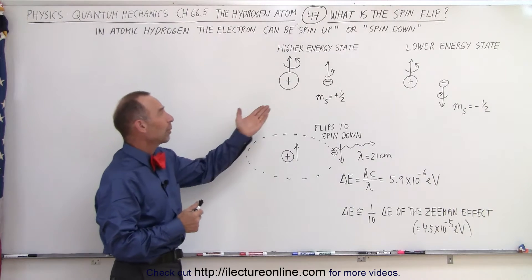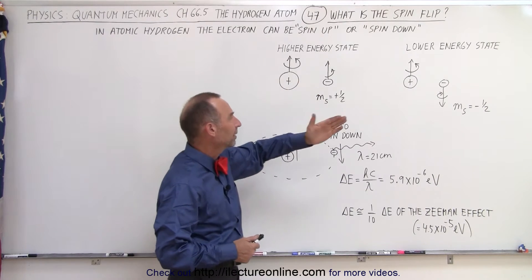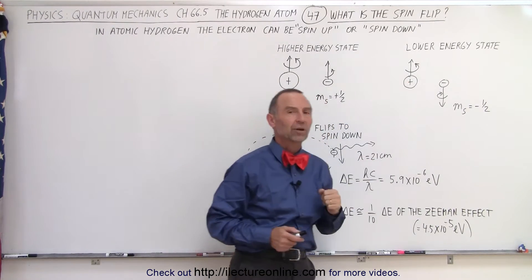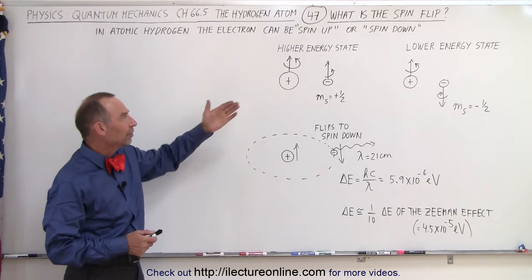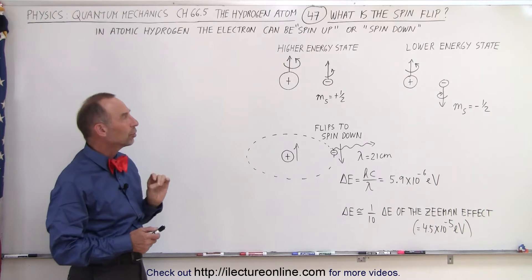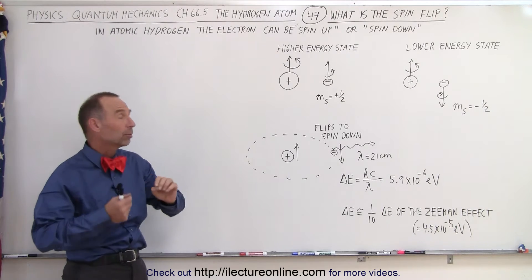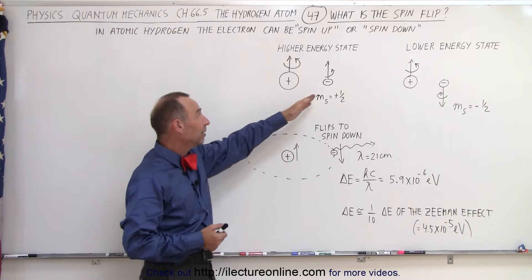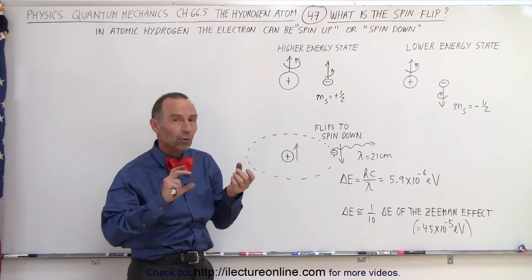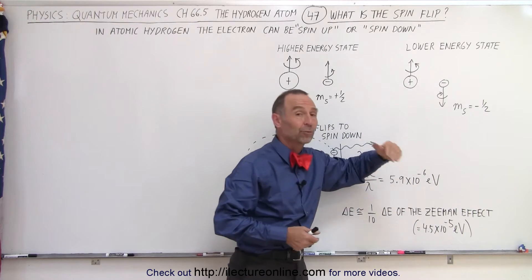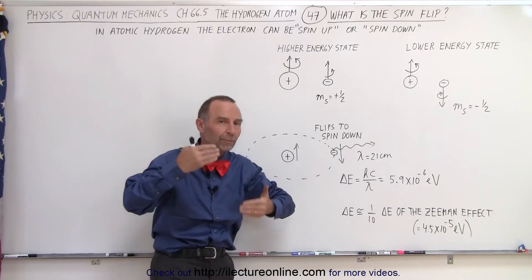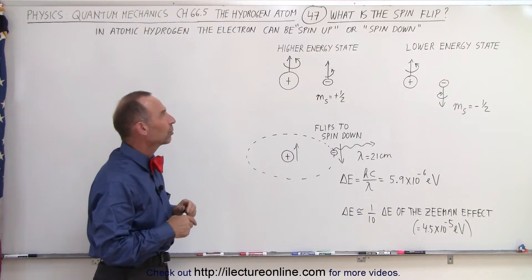So here we have an example where an electron that spin up, and there we have an example where an electron that spin down. In addition to that, we also have a spin for the proton in the nucleus, and there is an interaction between the spin of the proton and the spin of the electron. And so when the electron flips the spin from spin up to spin down or from spin down to spin up, there's going to be an energy interaction between the two.